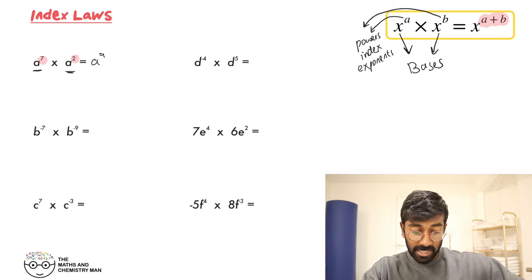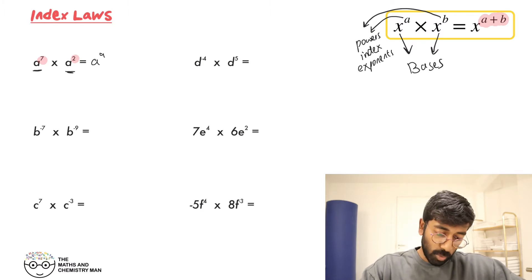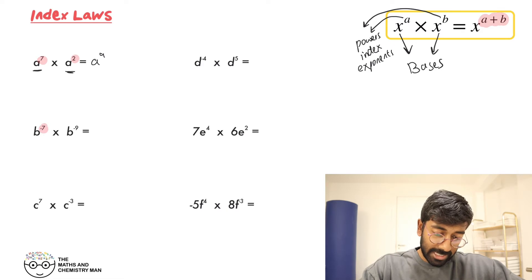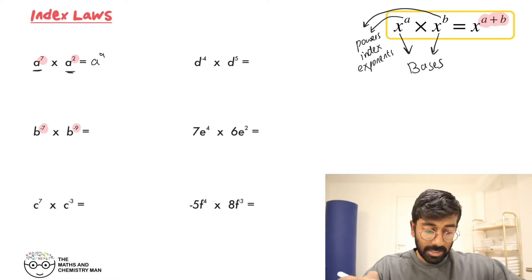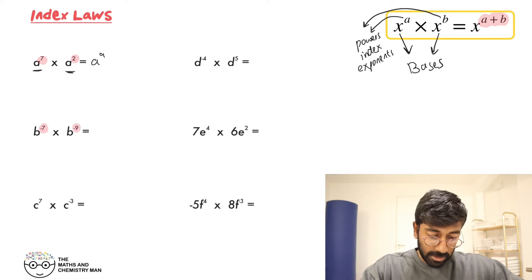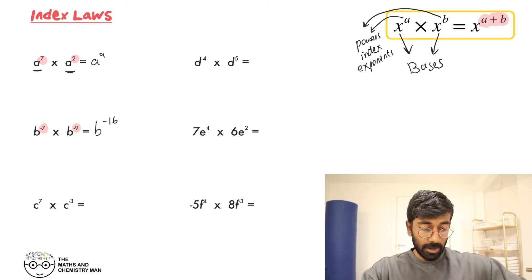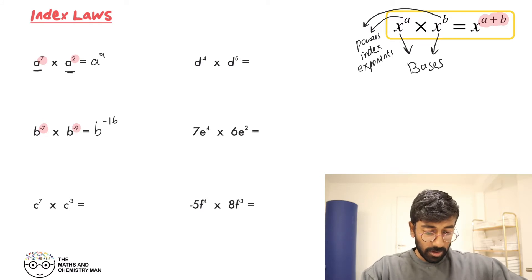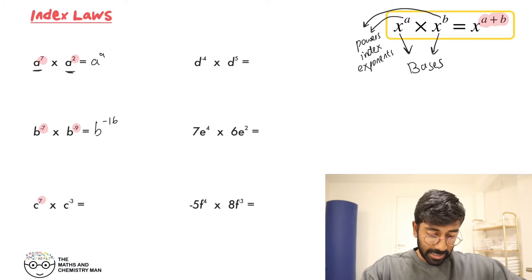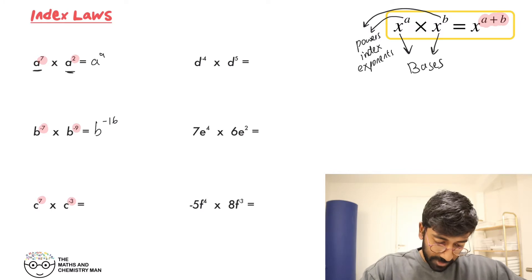Make sure we're adding those together again: minus 7 plus minus 9, so B to the power of minus 16. Next one down, we've got C to the power of 7 and C to the power of minus 3. Again, add those together — that's C to the power of 4, which is 7 plus minus 3.